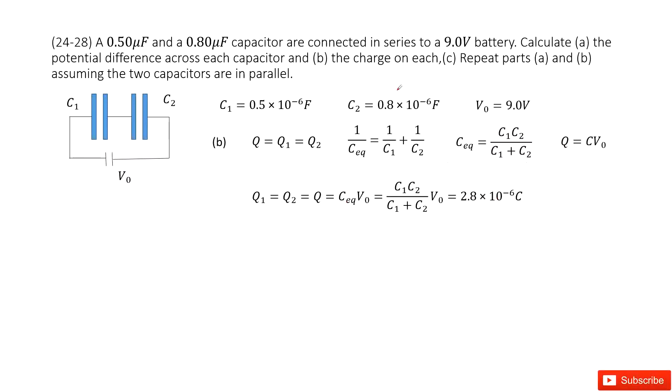The next part asks you to find the charge on each. So find charge Q1 and Q2. This is a series connection, so the charge equals everywhere. The charge Q equals Q1 equals Q2. This Q is just the equivalent capacitance times V0. We got equivalent capacitance in previous calculations. Input it inside and you get the answer.